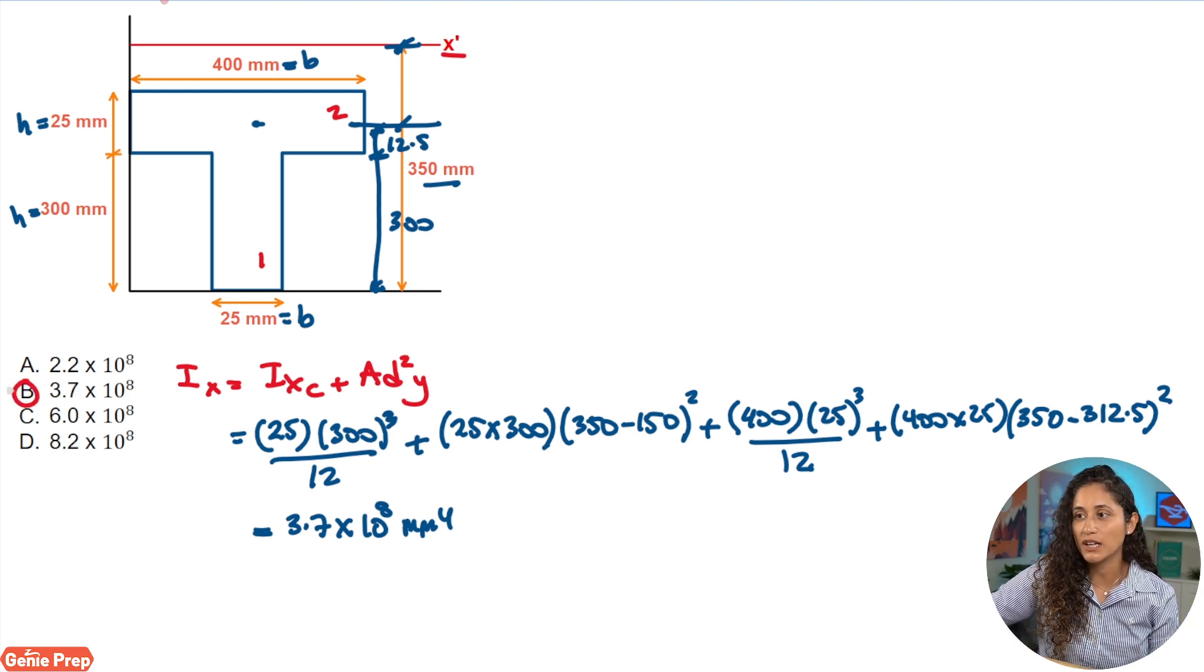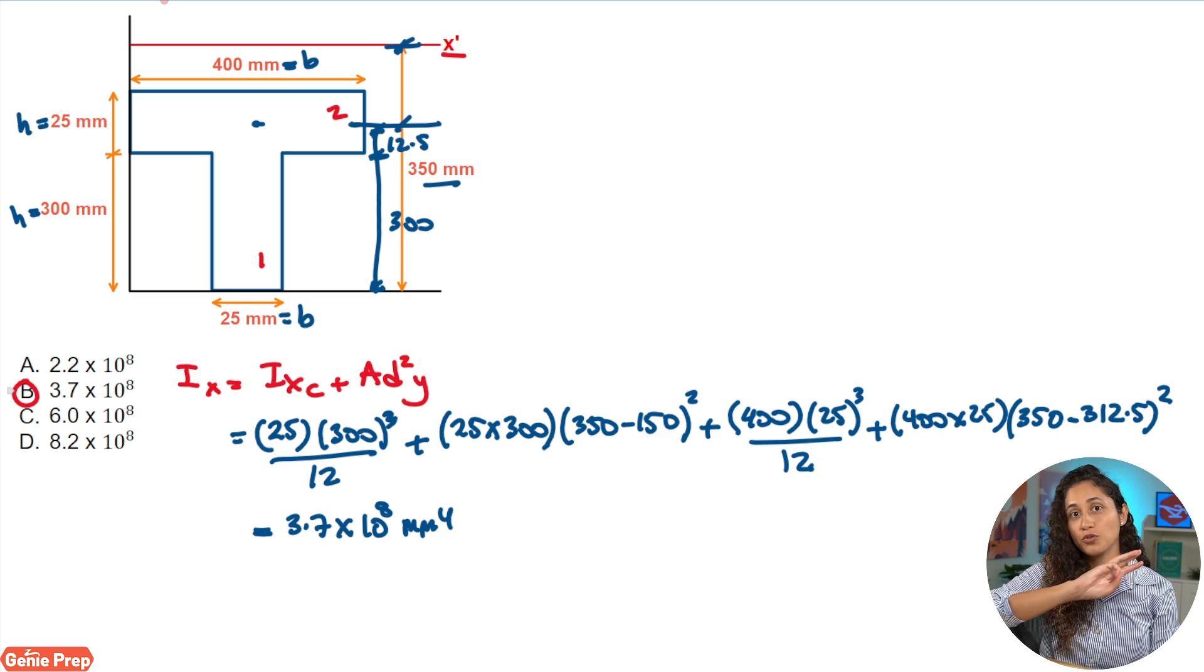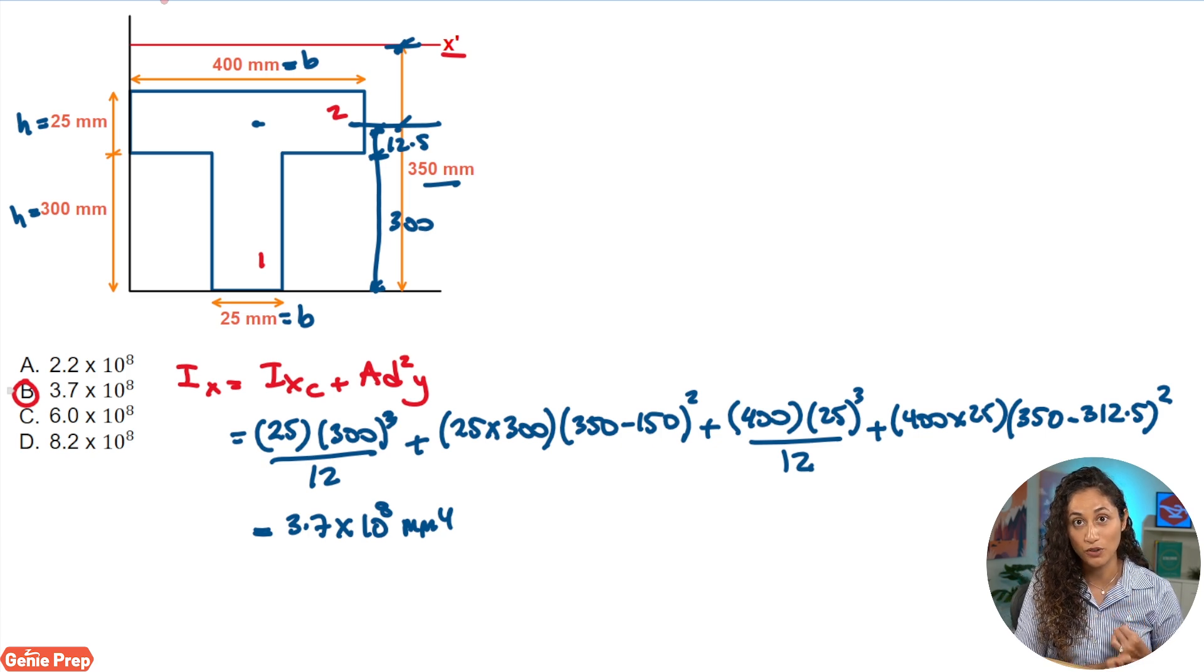Now, so far, guys, we have covered all three different types of moment of inertia. So we have moment of inertia about the centroidal x-axis, we covered that. We also covered in the previous video the moment of inertia about the x-axis. And then here we covered the moment of inertia about x-prime axis. So it's very important, guys, that you know the difference between these three different types of moment of inertia.